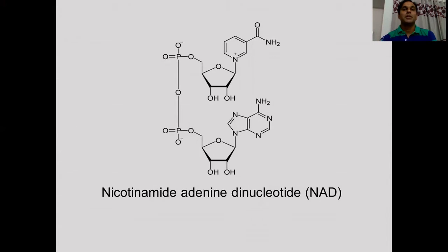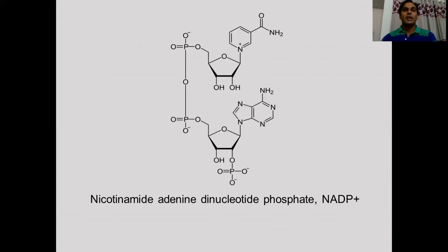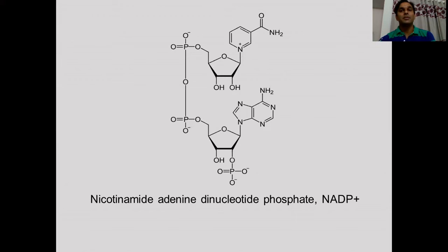Nicotinamide adenine dinucleotide phosphate, abbreviated as NADP (formerly called triphosphopyridine nucleotide or TPN), is a cofactor used in anabolic reactions such as the Calvin cycle and lipid and nucleic acid biosynthesis, which require NADPH as a reducing agent. NADPH provides reducing equivalents for biosynthetic reactions and protects against the toxicity of reactive oxygen species by allowing regeneration of glutathione. NADPH is also used for anabolic pathways such as cholesterol biosynthesis and fatty acid chain elongation.